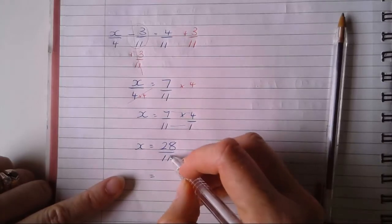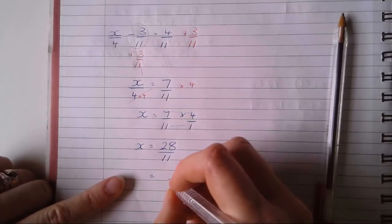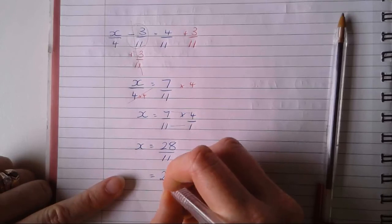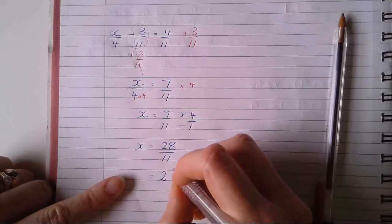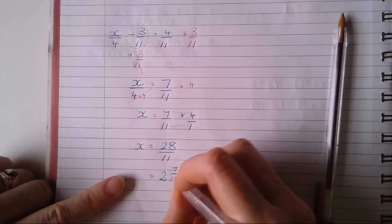So we're thinking, how many times does eleven go into 28? Well, two lots gets me to 22, and that would leave me with seven remainder over eleven.